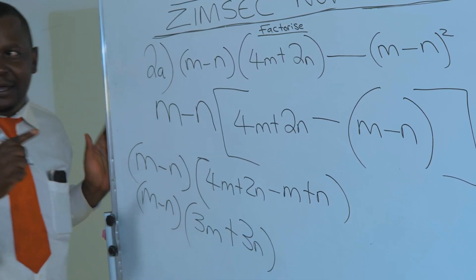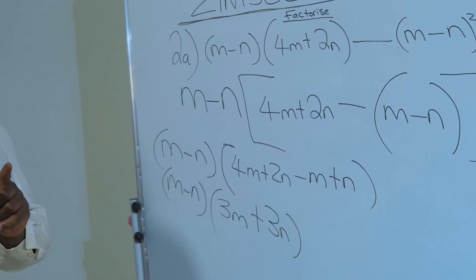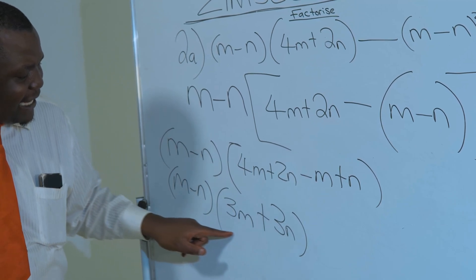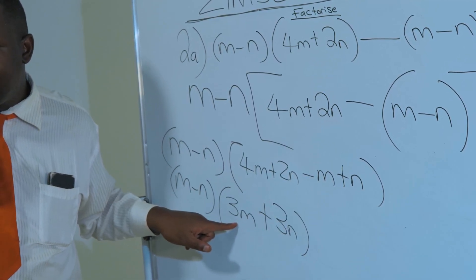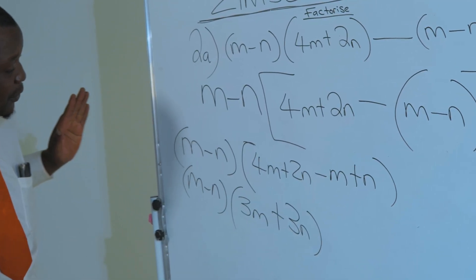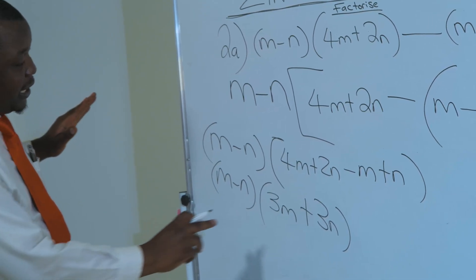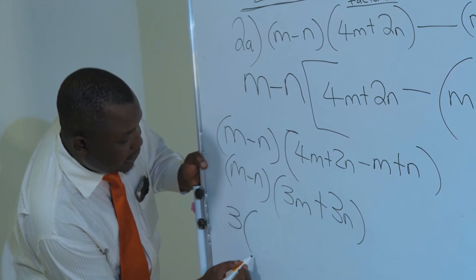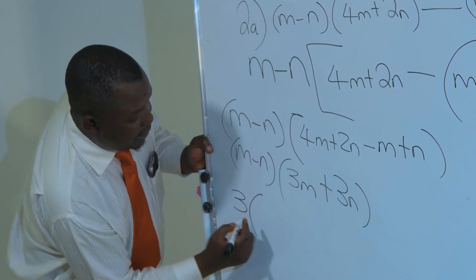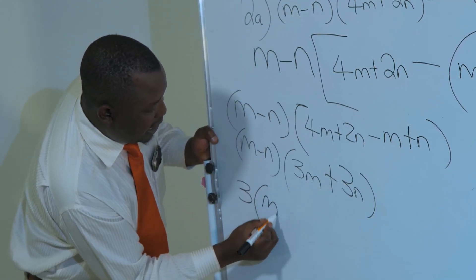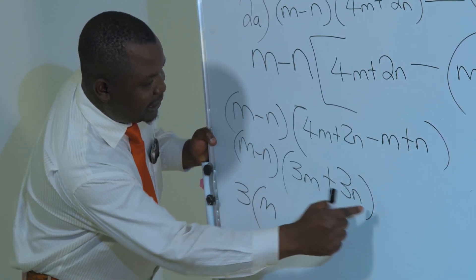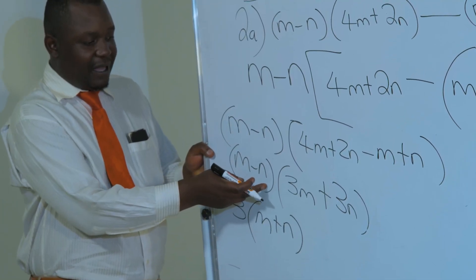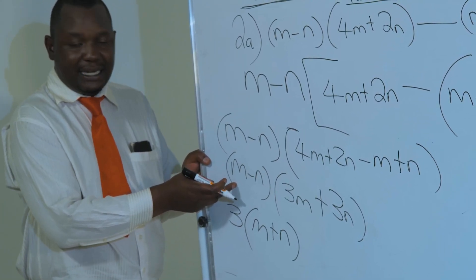But still we are not yet done with the question. Why? Because we have a common factor 3 in the bracket. So what you are supposed to do here is factor out 3 from this bracket. And then 3 into 3M, you get M; 3 into 3N, you get N. Close the bracket. And then we have M minus N on that side.